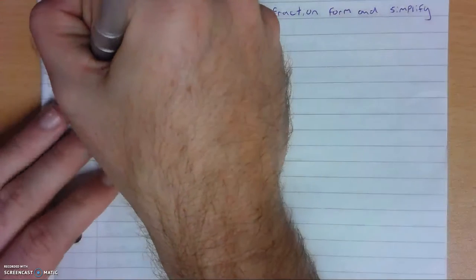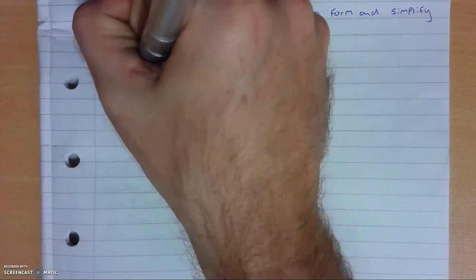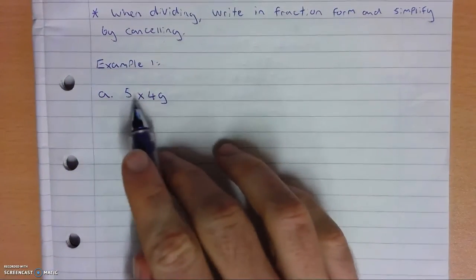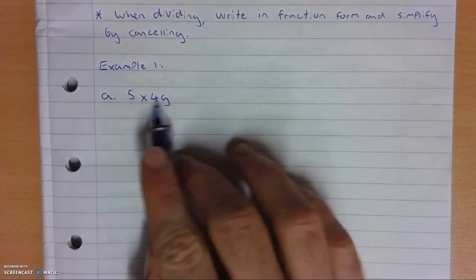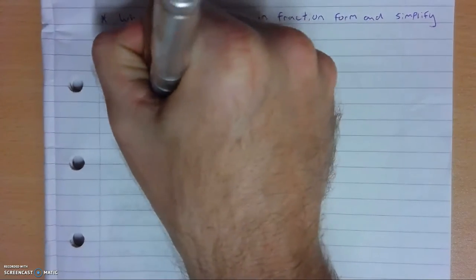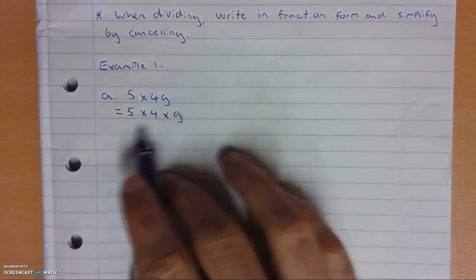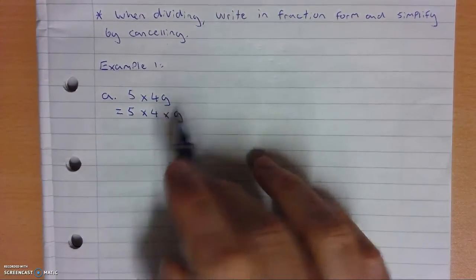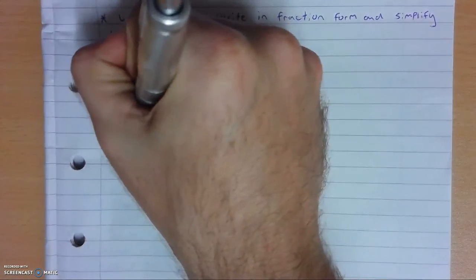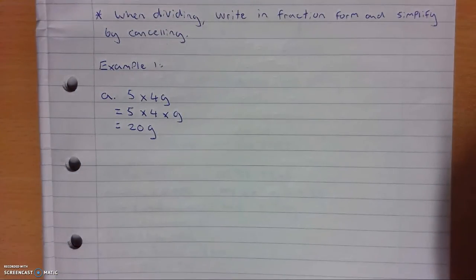So the first example we'll do will be 5 times 4g. So the first thing we do is expand this out by adding in our hidden multiplication symbols, so that'd be 5 times 4 times g, and our numbers and variables are already grouped together, so what we'll have to do is multiply this out, and 5 times 4 is 20, and 20 times g is 20g.